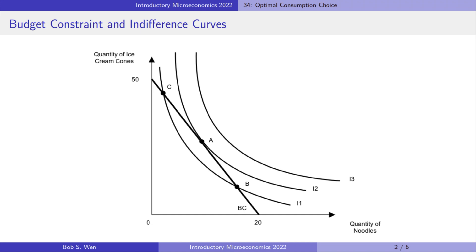We add the consumer's indifference curves to the graph. The indifference curves represent her preferences for consuming different bundles of ice cream and noodles. We draw the budget line and the indifference curves on the same graph. There are an infinite number of indifference curves representing different levels of utility. I draw three of them.